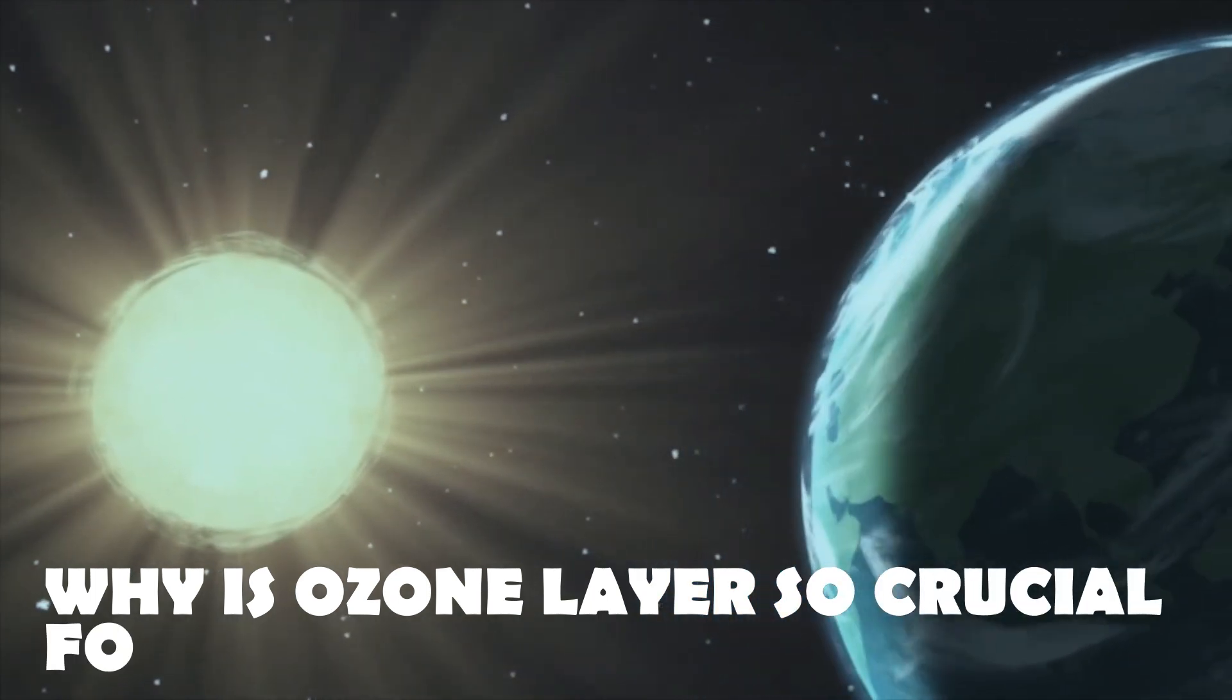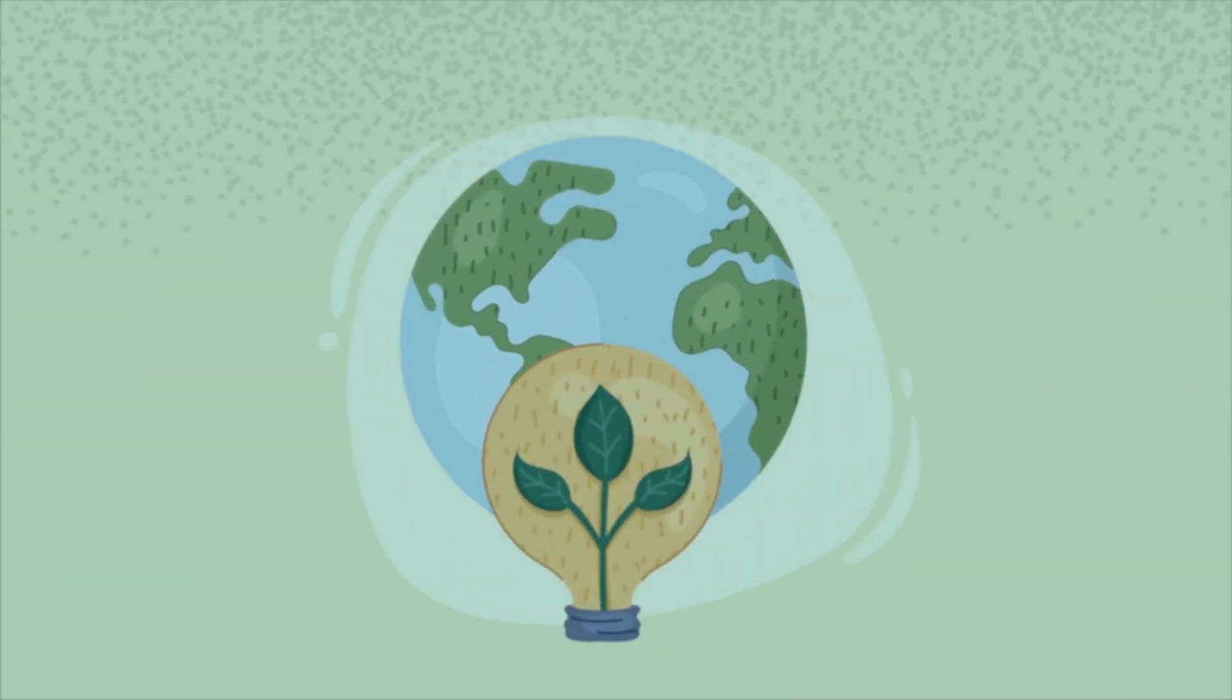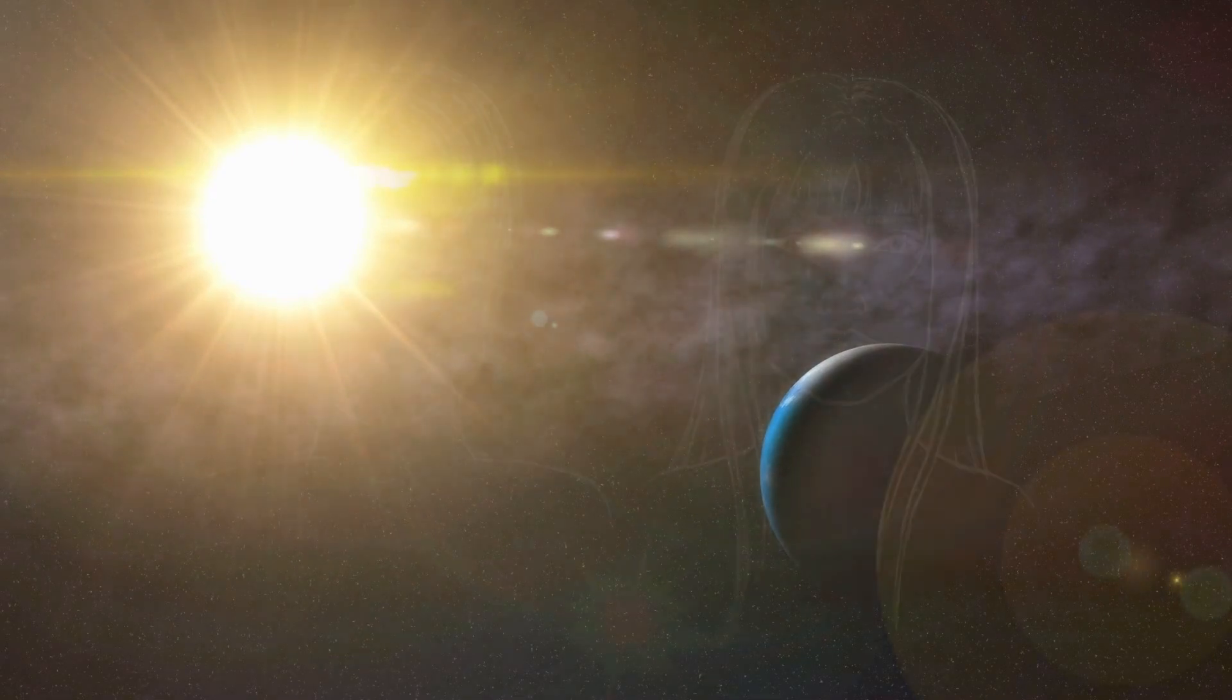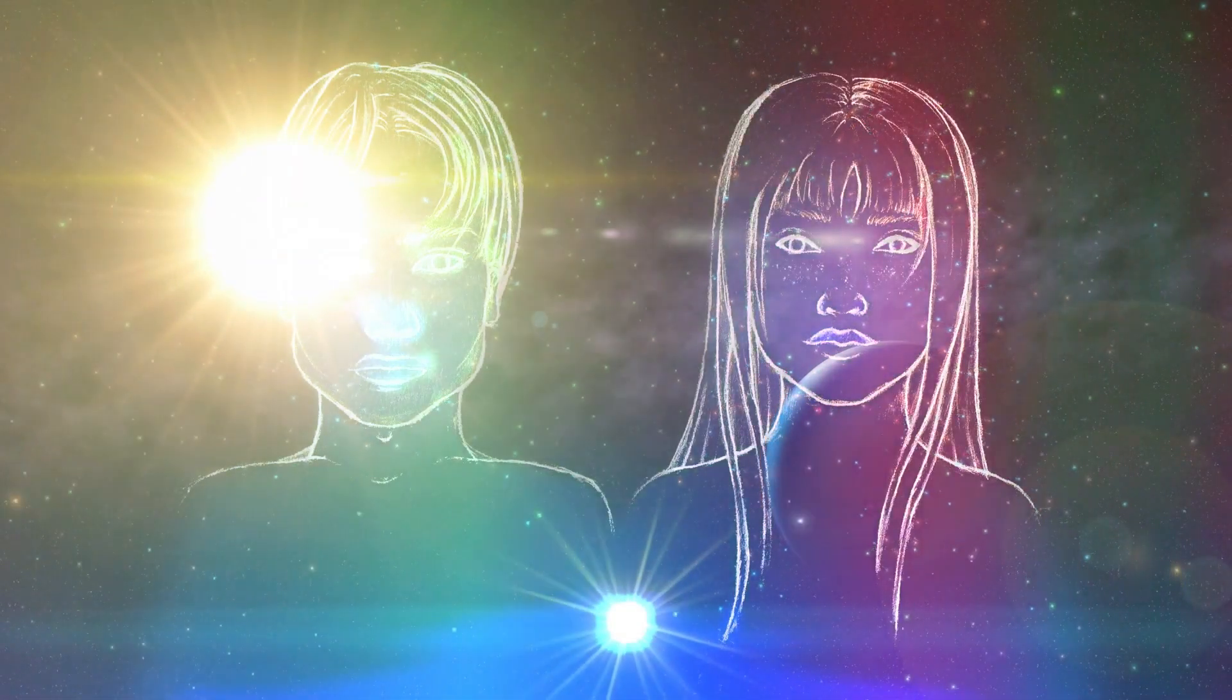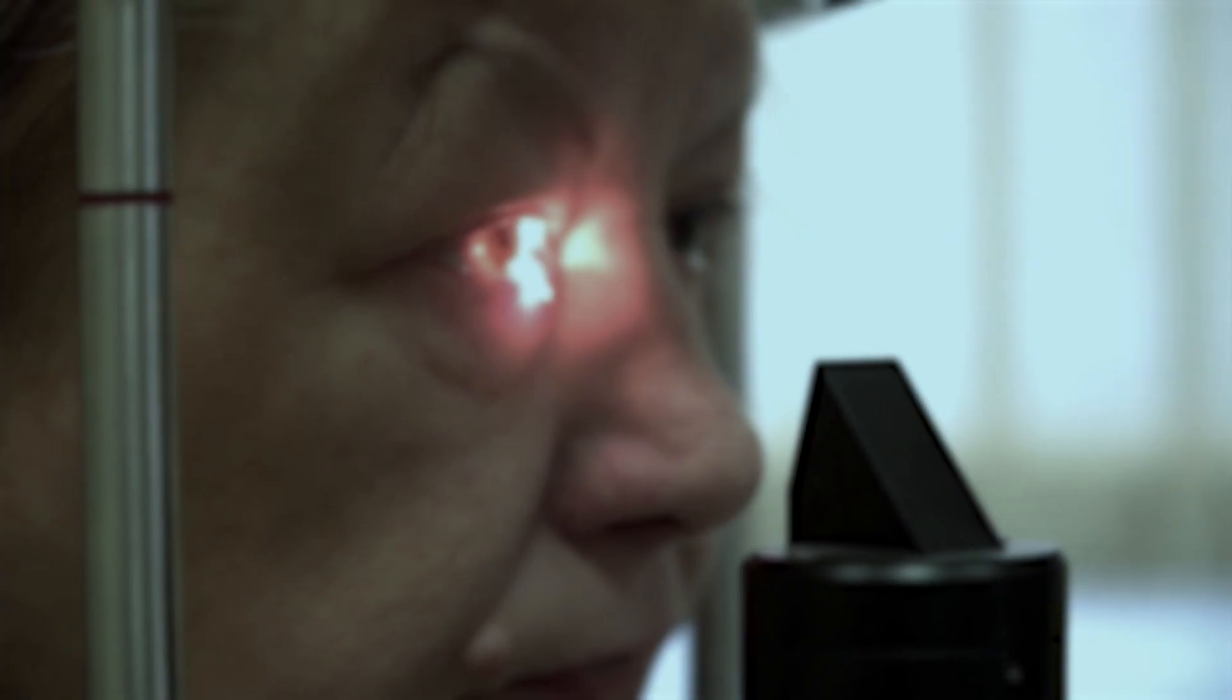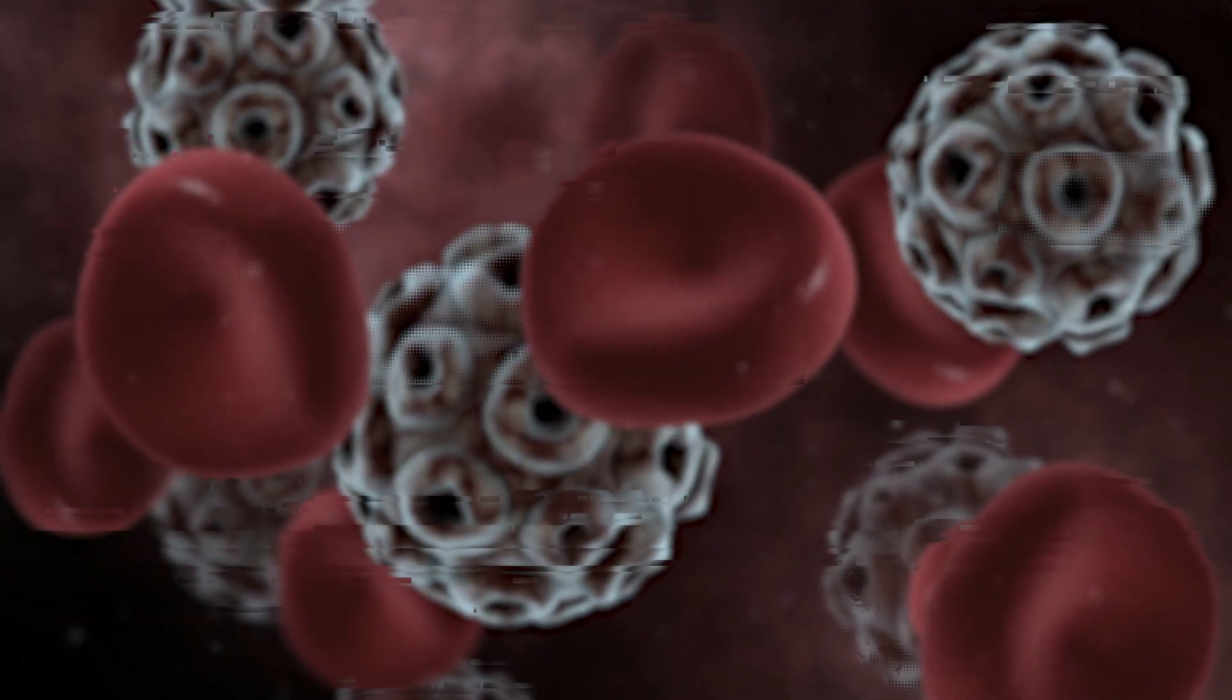But why is the ozone layer so crucial? Primarily, it's our guardian against the sun's perilous ultraviolet UV radiation. Without it, we'd be exposed to harmful rays, leading to adverse consequences such as sunburns, compromised immunity, cataracts, and even cancers.